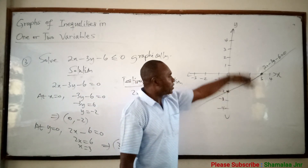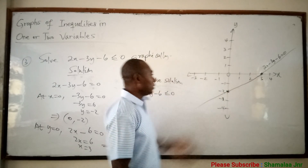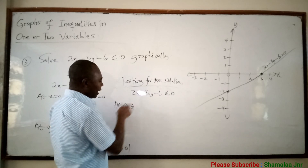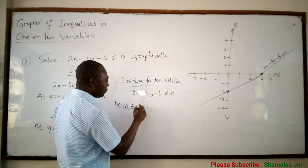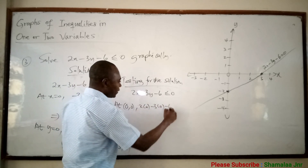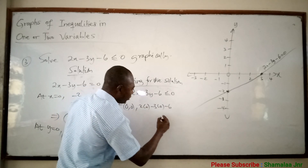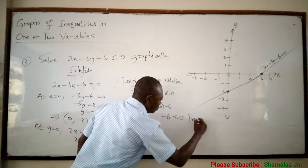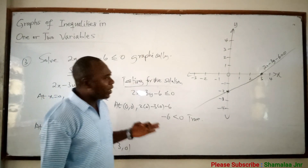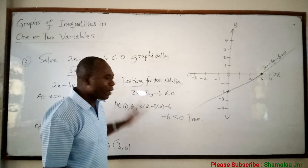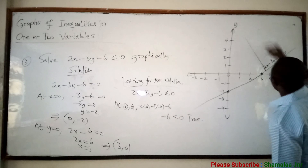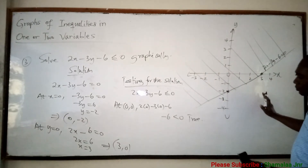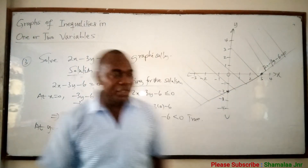I can pick the point (0, 0), which is above this line. When you put x equal to 0 and y equal to 0, you get 2(0) minus 3(0) minus 6, which gives 0 minus 0 minus 6, which equals negative 6. And negative 6 is less than 0 — this is true. Because we picked a point above the line and that point satisfied the inequality, you shade this side. The shaded region is the solution of this inequality.